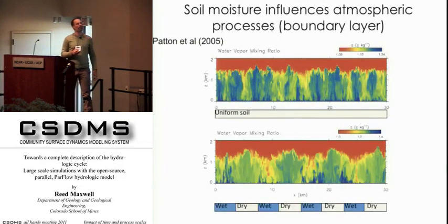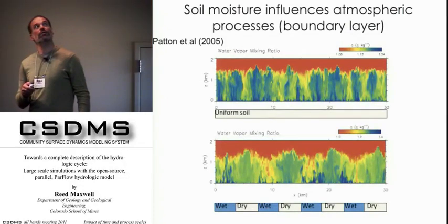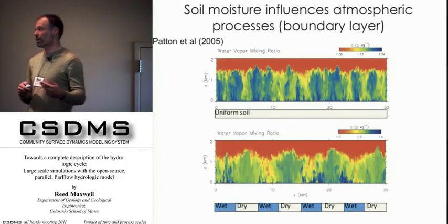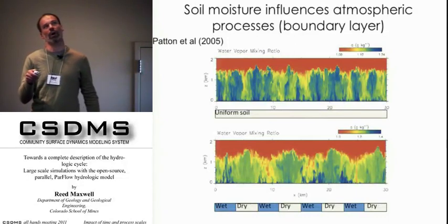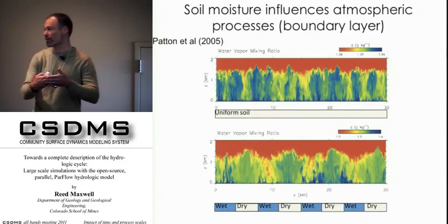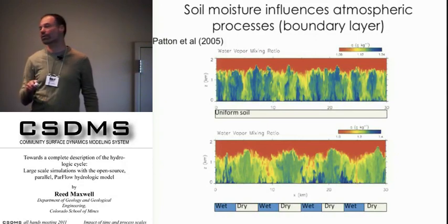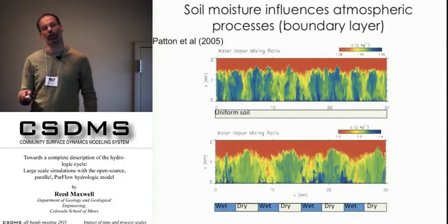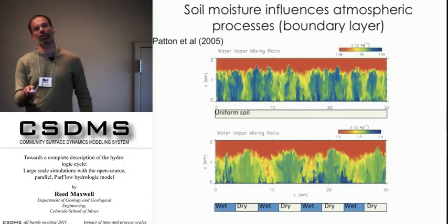Looking at some examples from the atmospheric community on how these interactions can be important: this is some work from Ned Patton, done in 2005. He had a very finely resolved atmospheric model — 30 kilometers by 2 kilometers at high spatial resolution — a 3D model averaged into the page. He has very simple experiments with a uniform soil moisture across the 30-kilometer transect and then alternating wet-dry patterns.